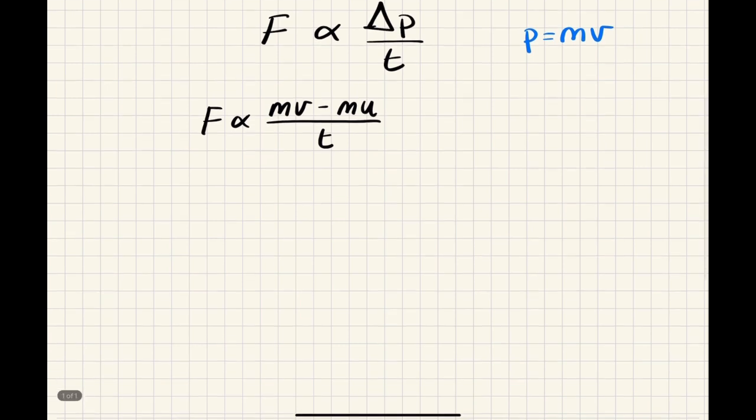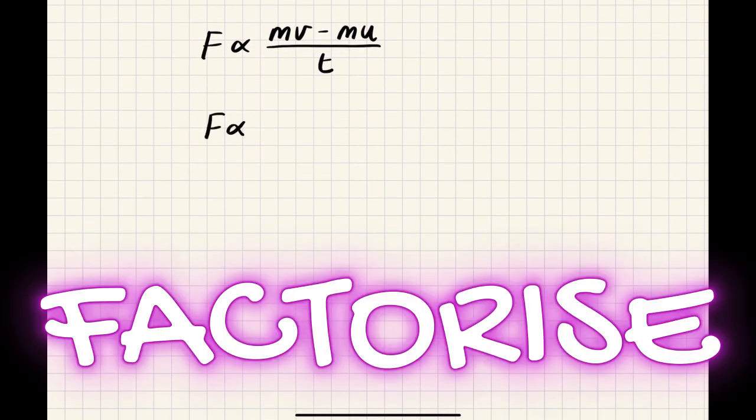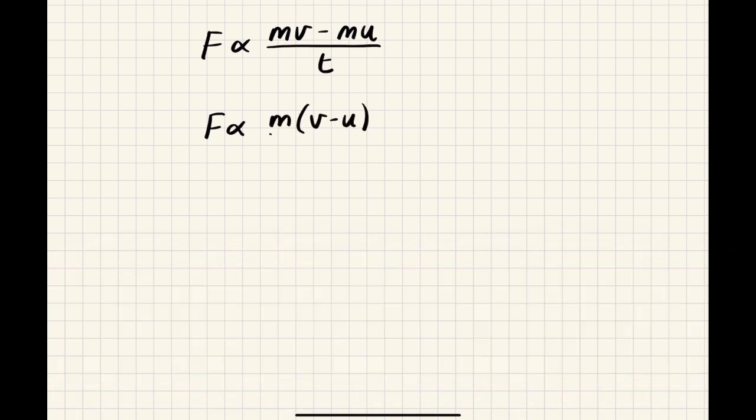In our next step, all we're going to do is factorize this. So I'm going to take out the M's, and I get V minus U all over T.